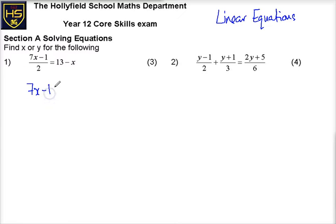That helps us to get rid of the fraction, so we're multiplying the divided by 2, and then multiplying the right hand side by 2 gives us 26 minus 2x.